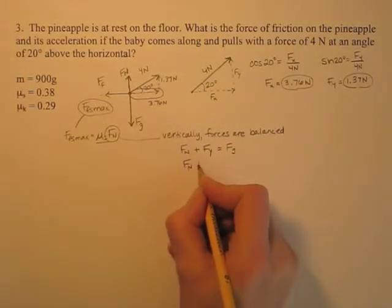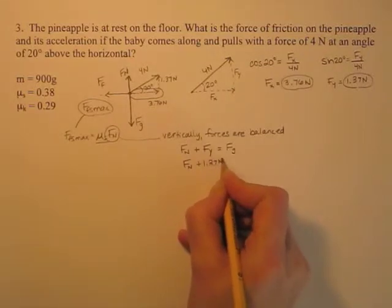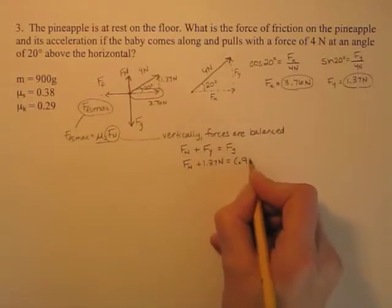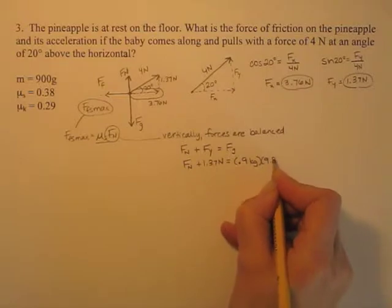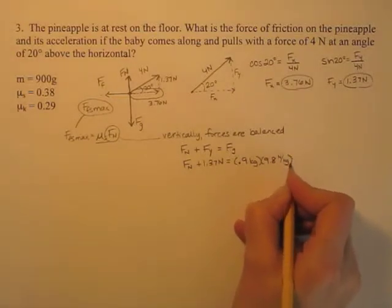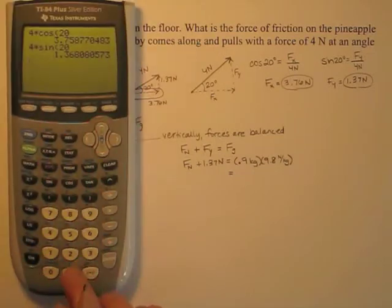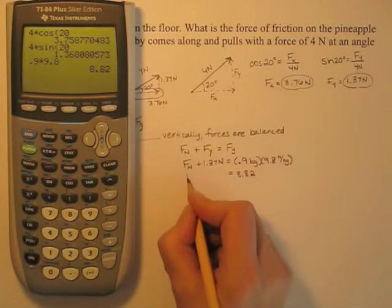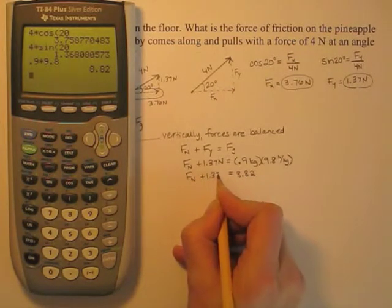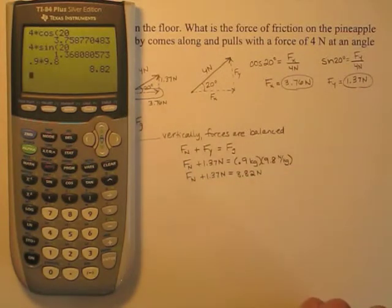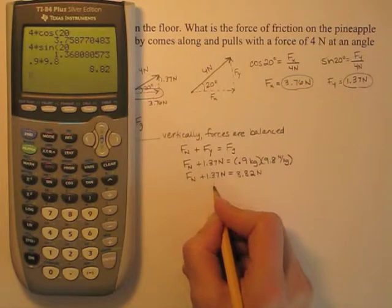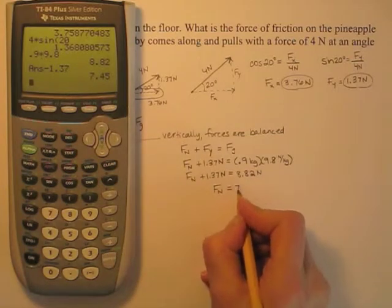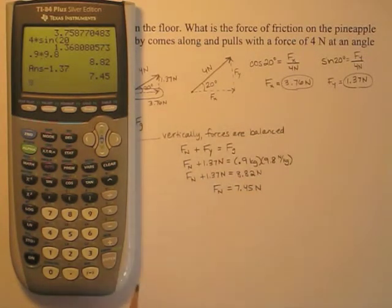Fy is 1.37 newtons. The force of gravity is mass times g: 0.9 kilograms times 9.8 newtons per kilogram equals 8.82 newtons. So Fn plus 1.37 equals 8.82. Subtracting 1.37 from both sides gives a normal force of 7.45 newtons.